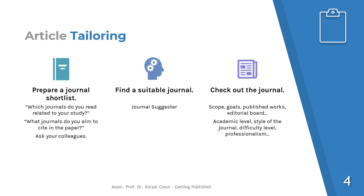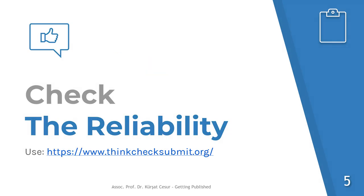There are other things you may want to consider, such as the academic level of the journal, the style of the journal, difficulty of getting published, professionalism, or estimated publication time. Lastly, check the reliability of the journal. You can use the website thinkchecksubmit.org.